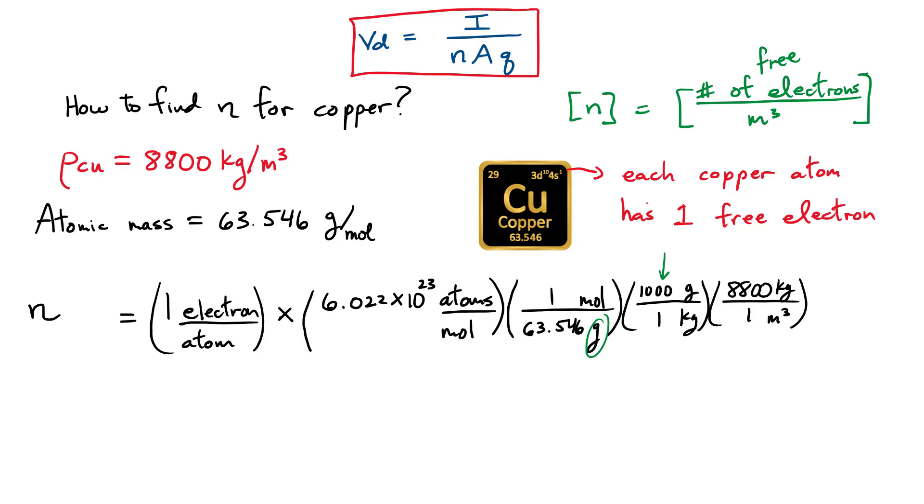If you carry this out and look at everything, the way things are going to cancel out, we have atoms and atoms, moles and moles, grams cancel with grams, kilograms cancel with kilograms. And what are you left with? You're left with electrons over here, and we're going to be left with meters cubed. And that's exactly what we wanted for our density of free electrons. So if you carry out that calculation, put those numbers in your calculator. For copper, you should find little n that's equal to approximately 8.34 times 10 to the 28 electrons per meter cubed that are contributing to this current.